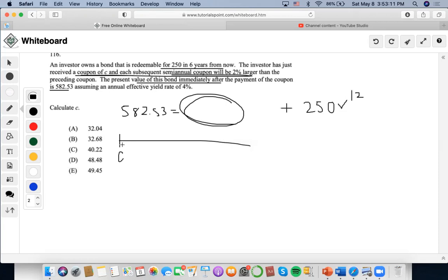And then afterwards, each subsequent semi-annual coupon will be 2% larger than the preceding coupon. So that means that at time one, it's going to be C times 1.02. And then at time two, it's going to be C times 1.02 squared.